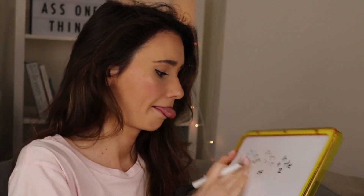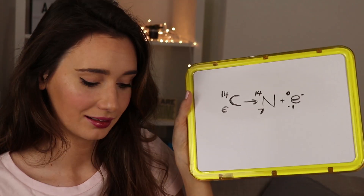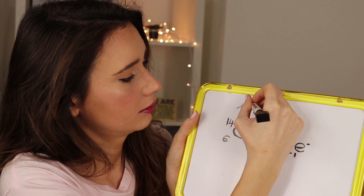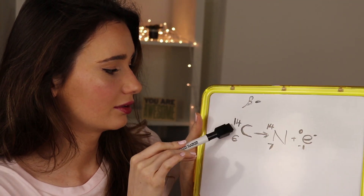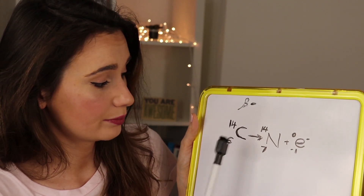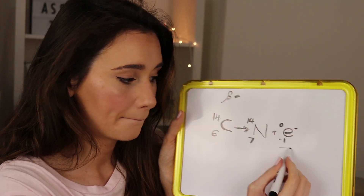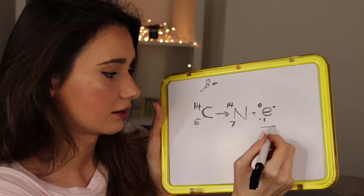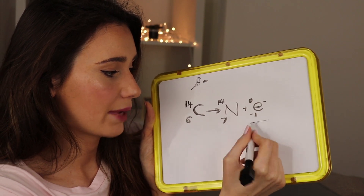As an example, carbon-14 is a radioactive isotope of carbon with eight neutrons instead of the usual six. Through beta negative decay, carbon-14 can turn into nitrogen. On the whiteboard: the mass number stays at 14 — since it doesn't change in beta negative decay — but the atomic number increases by one, so carbon turns into nitrogen. The beta particle is emitted from the nucleus in this process, giving us the new nitrogen atom.